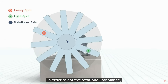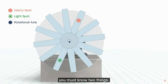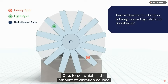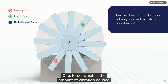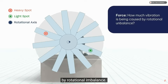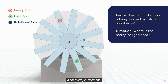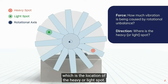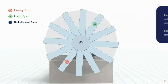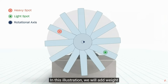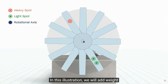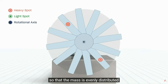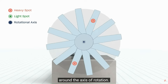In order to correct rotational unbalance, you must know two things: one, force — the amount of vibration caused by rotational unbalance — and two, direction — the location of the heavy or light spot. In this illustration, we will add weight to counterbalance the heavy spot so that the mass is evenly distributed around the axis of rotation.